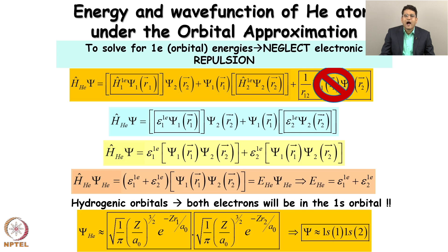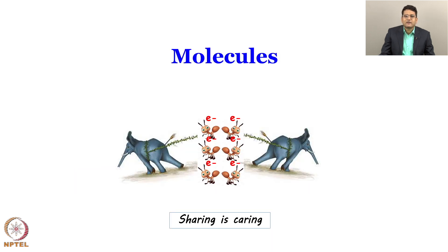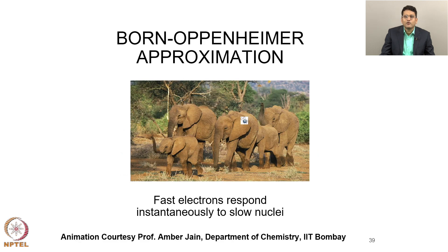Before going into that, let us see how the wave function is different for molecules. A molecule differs from atoms in that atoms have only one nucleus, while molecules have more than one nucleus. Therefore we need an additional approximation to solve molecules. The heavy nucleus and electrons are shared by nuclei, which leads to the concept of chemical bonding. To solve molecules, the first thing we must do is use the Born-Oppenheimer approximation. In this approximation, the nuclei are heavy and move slowly, while electrons adjust very quickly — the nucleus are like elephants and the electrons are like flies hovering over them. The position of the electrons is instantaneously adjusted with the motion of the heavy nucleus.